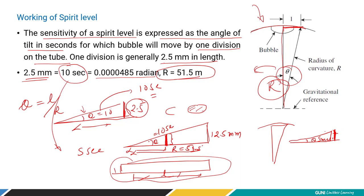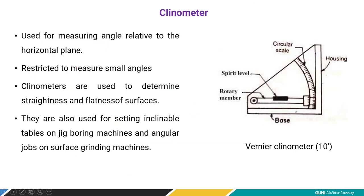Basically in industry, the spirit level is available with 10 seconds of angular measurement. The clinometer is another angular measuring device. Looking at the figure, it has a base on which the spirit level is fitted and pivoted at one end. This whole spirit level moves against a circular scale graduated in terms of angle.